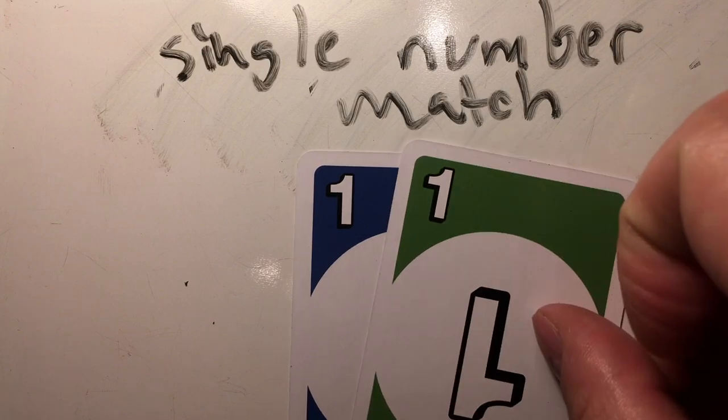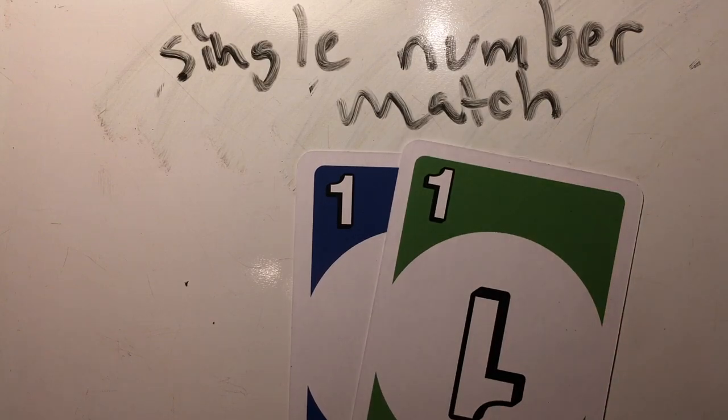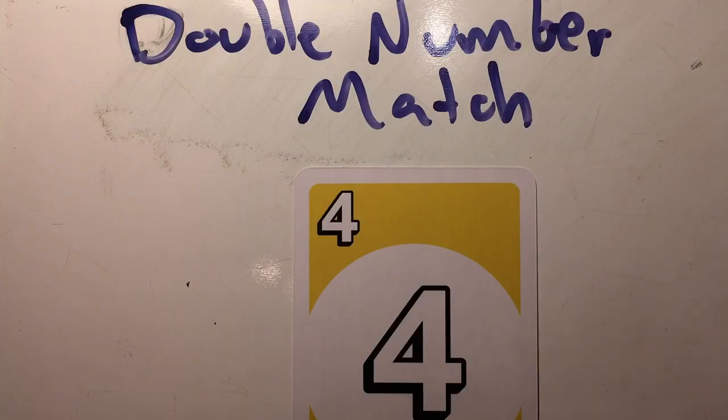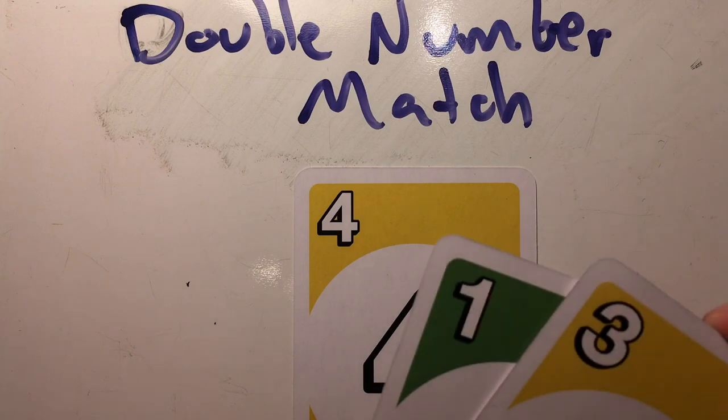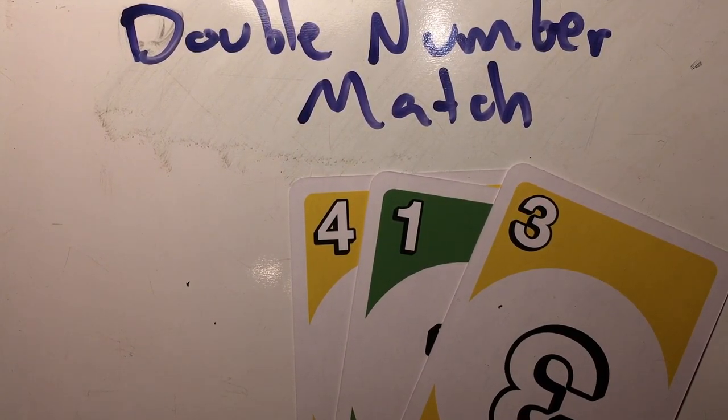To single number match, place any one card from your hand on a center row card with the same number. To double number match, place any two cards that add up to the number on a center row card onto that center row card.